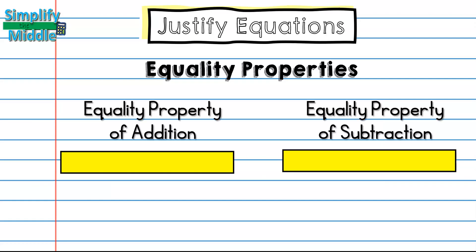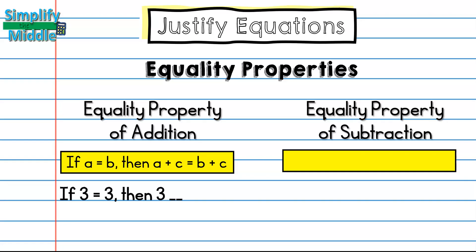We'll start with the equality property of addition and the equality property of subtraction. For addition: if a = b, then a + c = b + c. This means if you add something to one side and add the exact same thing to the other, you keep the equation balanced. So if 3 = 3, then 3 + 7 = 3 + 7, and we can verify: does 10 = 10? Yes, it does.